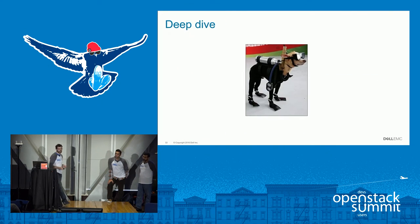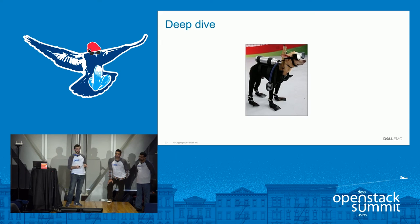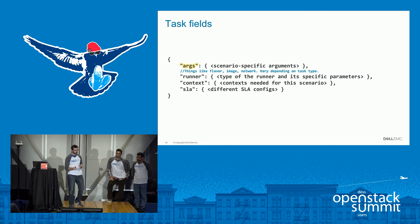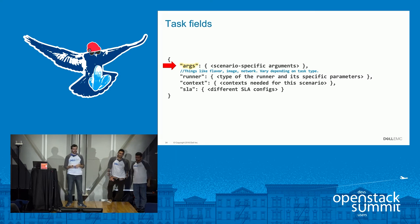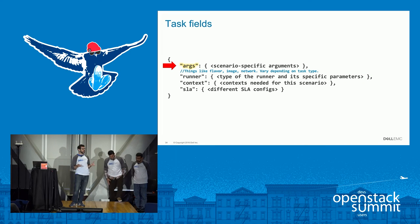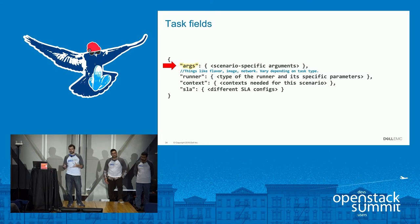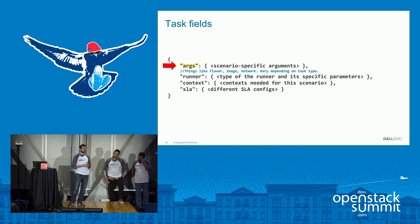Let's go deeper into what the different fields are in a task. We have four fields to fill out every time we specify a task. The first is arguments — these are scenario-specific arguments that vary depending on what type of task we're executing. For example, for a boot-and-delete task we specify the image to use, the flavor, and the network to put those instances into. For a Cinder operation we'd provide things like the volume type or the size of the volume.